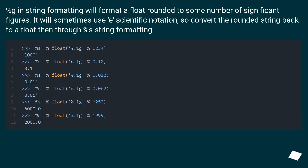%g in string formatting will format a float rounded to some number of significant figures. It will sometimes use scientific e-notation, so convert the rounded string back to a float, then through %s string formatting.